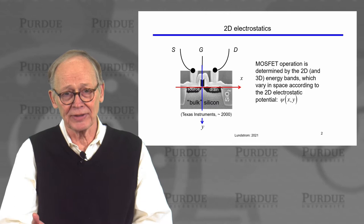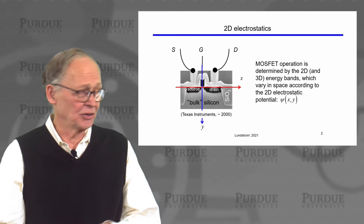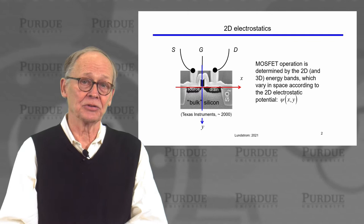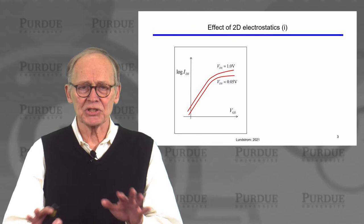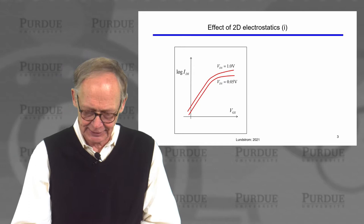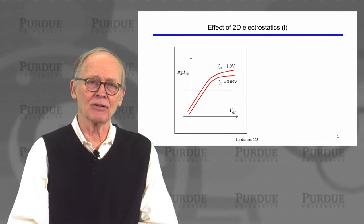Here's a sketch of a MOSFET — a bulk MOSFET from a few years ago, but the considerations are still very similar. There's an electrostatic potential that varies in X and Y and in general in Z, the third dimension coming out of the page. We're familiar with our transfer characteristics and DIBL, plotting log ID versus VGS. We know that there is DIBL.